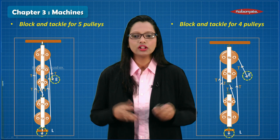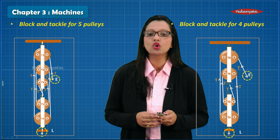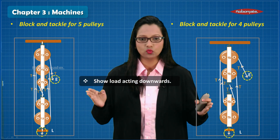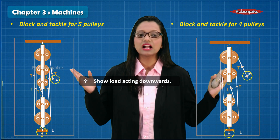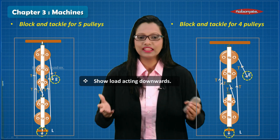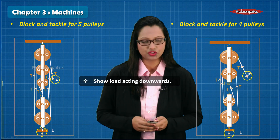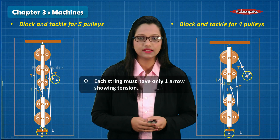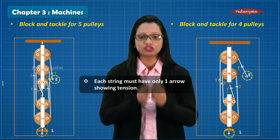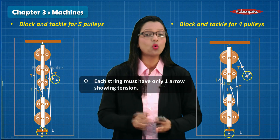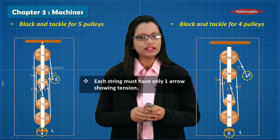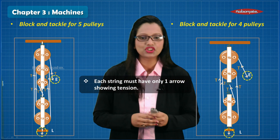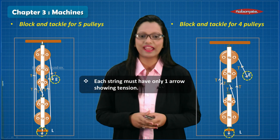For the small details: do not forget to show the load acting downwards and the effort also in the downward direction. One more fact — each string must have only one arrow showing tension, and that direction has to be in the upward direction.